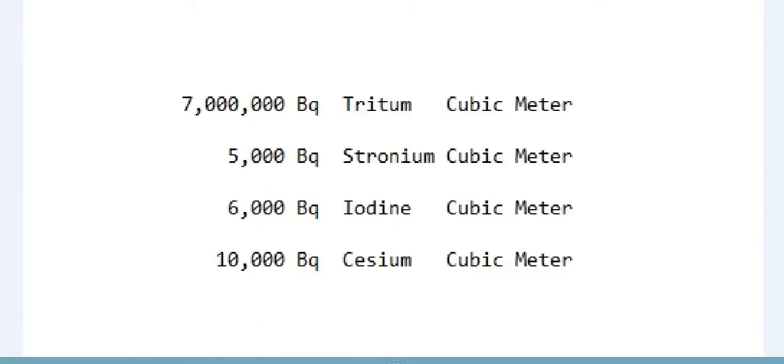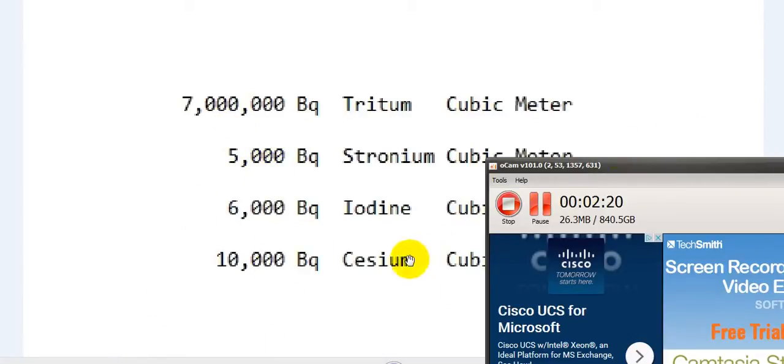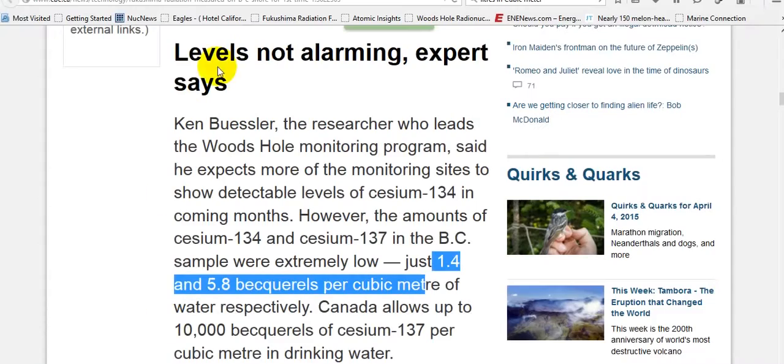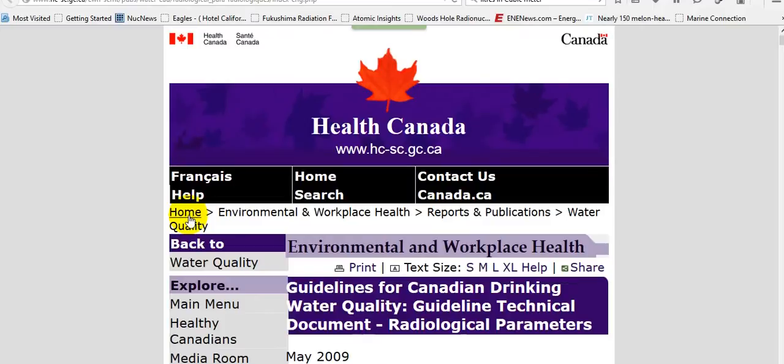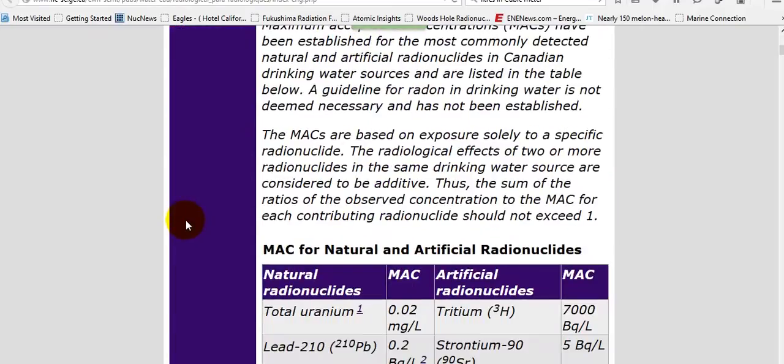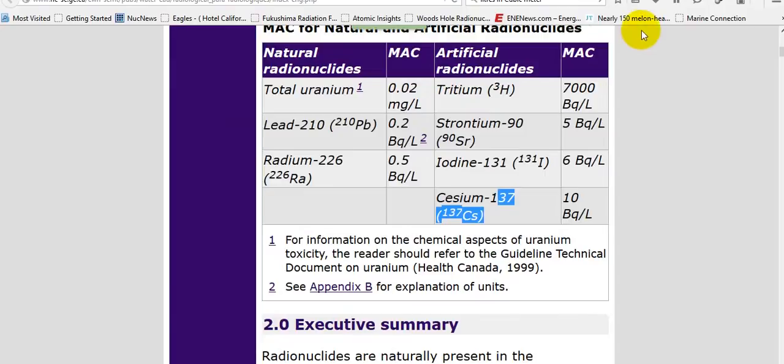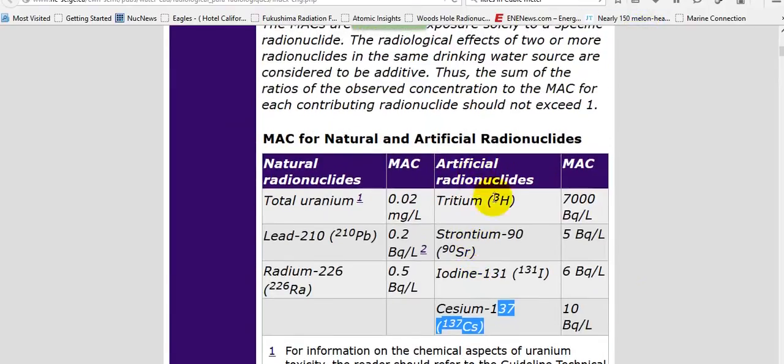So we're going to convert everything over to cubic meter. That's 7 million becquerels of man-made tritium per cubic meter in our drinking water. It's an acceptable standard according to Health Canada.